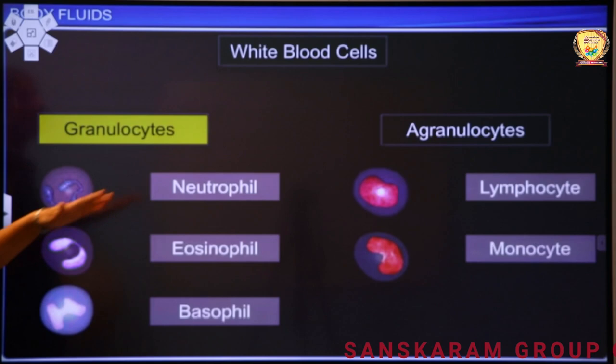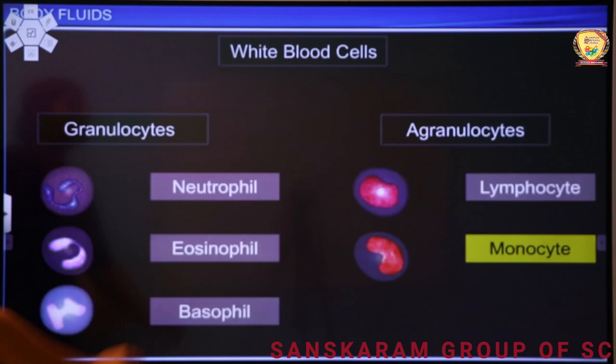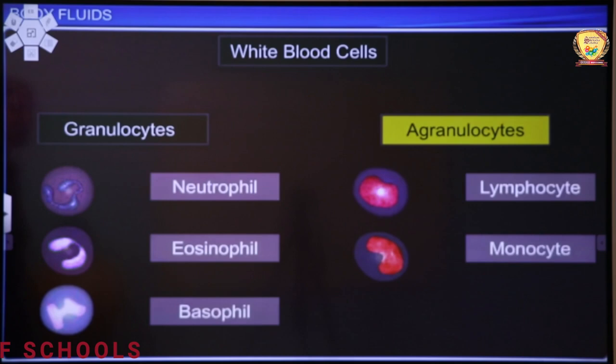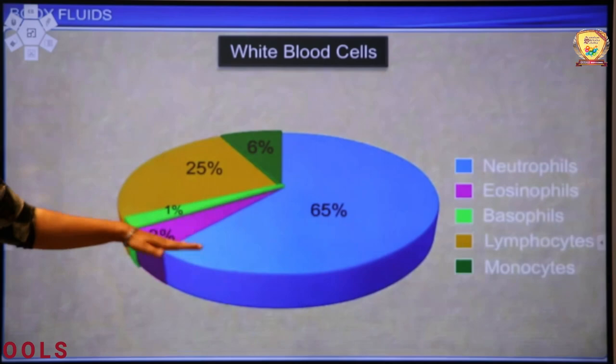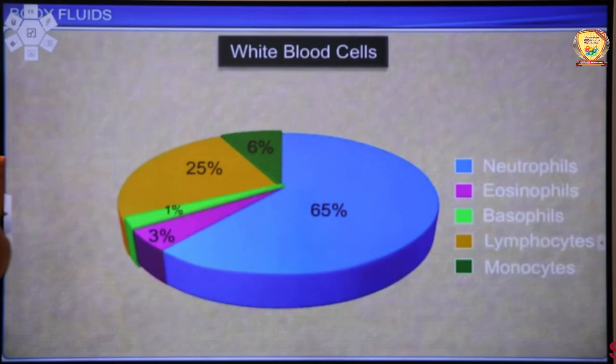Now discussing functions of granulocytes — each one's function has been discussed in detail. In agranulocytes: lymphocytes and monocytes. Lymphocytes are of two types: B and T. Monocytes convert into macrophages in tissue. The diagram explains the functions clearly — observe the concentrations. Remember only what is given in NCERT, as for NEET, NCERT is the Bible.